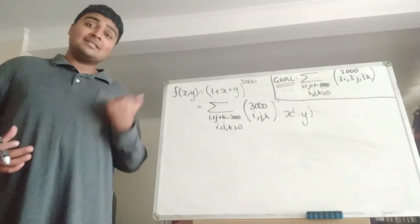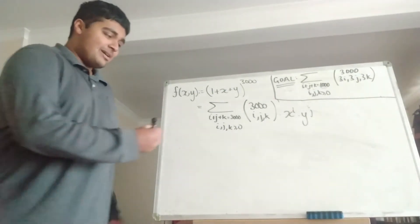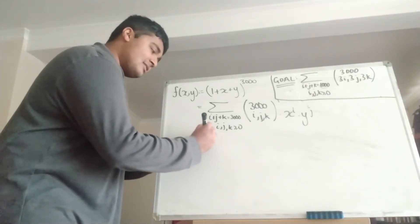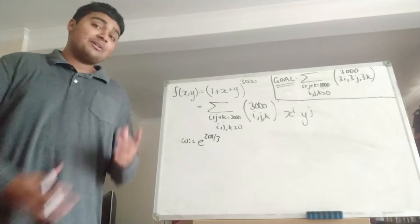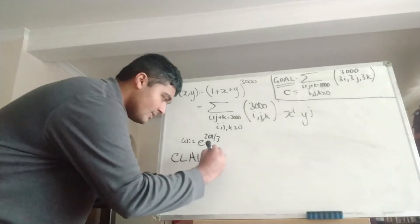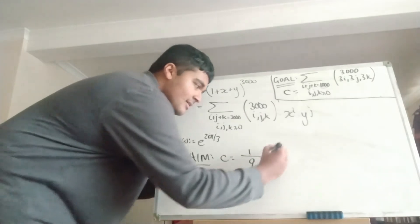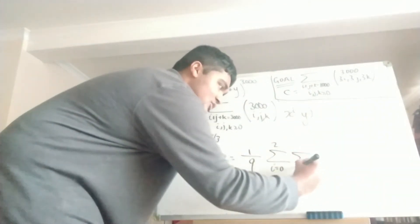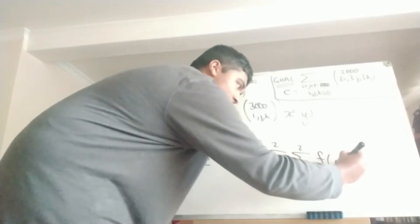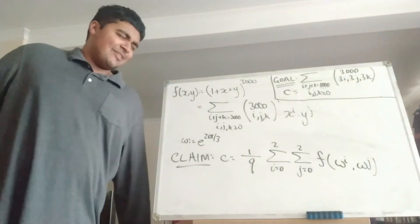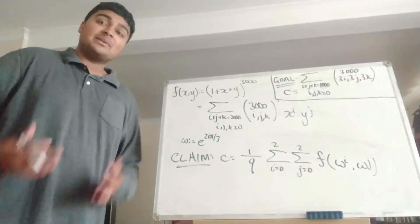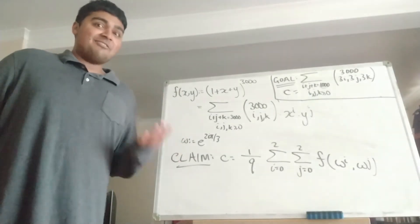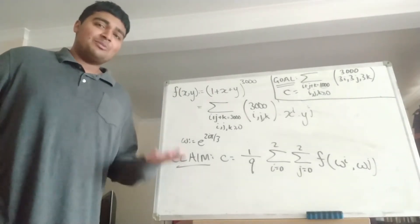Now why is this important, and how does this relate to complex numbers? Let me introduce the complex number we're going to be focusing on: omega, which is e to the 2πi over 3 — a primitive cube root of unity. I claim that c, the number we want to compute, is just one-ninth times the sum from l equals 0 to 2 times the sum from m equals 0 to 2 of f(ω^l, ω^m). Once I can prove this claim, we can see that we're just summing up a few terms, so we can do that by hand and get our answer.